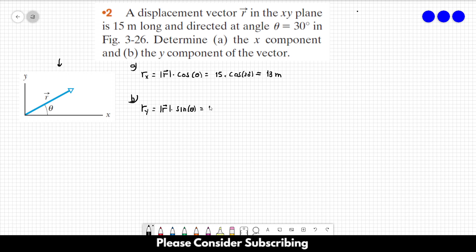In this case, it's 15 times the sine of 30 degrees, and this is 1 over 2, and the answer is 7.5 meters. This is the answer of this exercise.